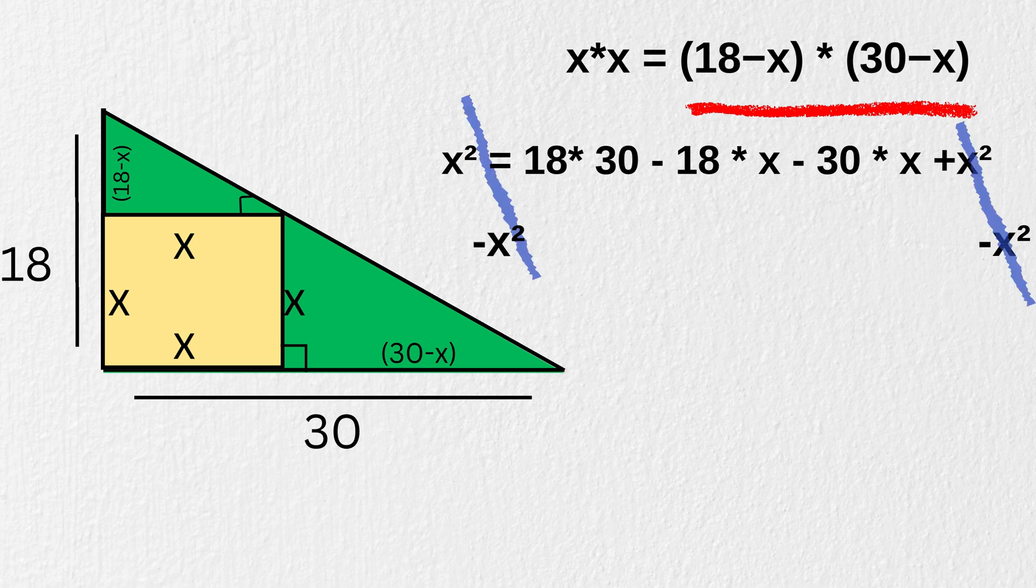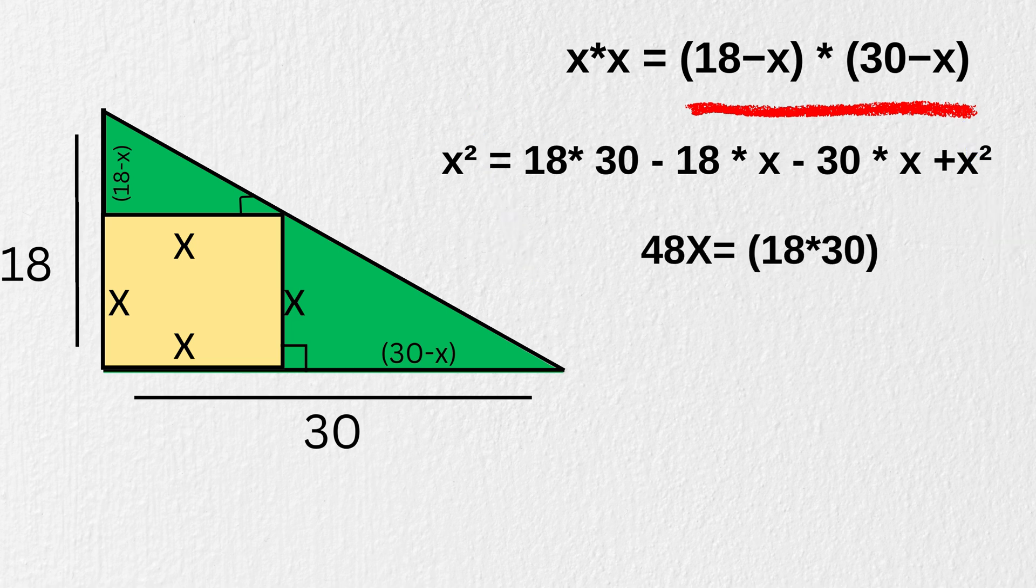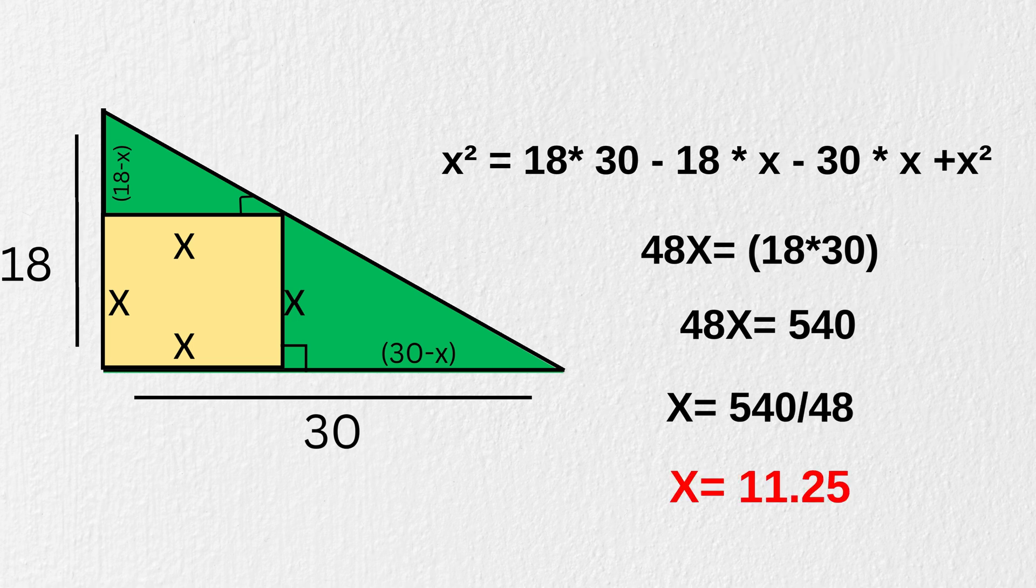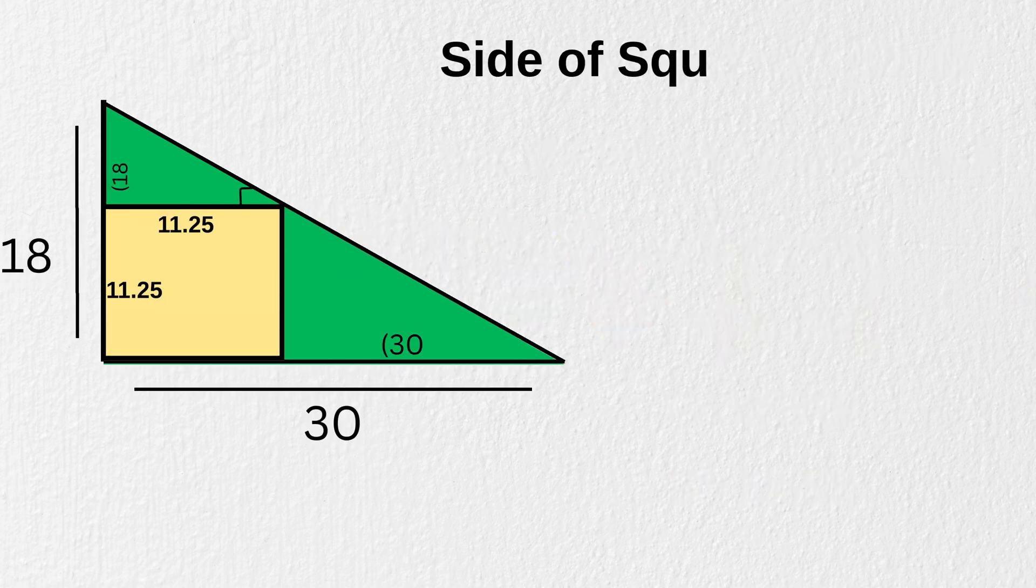Now, subtract x squared from both sides, and that simplifies to 48x is equal to 18 times 30. Now, solve this simple equation. 48x is equal to 540. Then divide both sides by 48. So, finally, value of x equals 11.25. So, we've found that the side of the square is 11.25 units long.